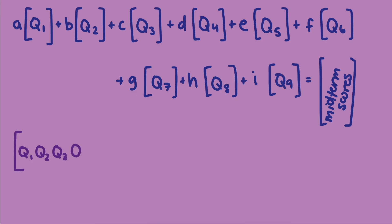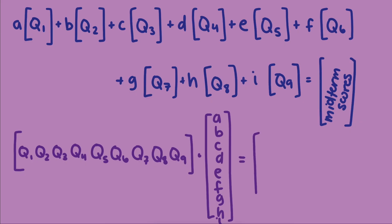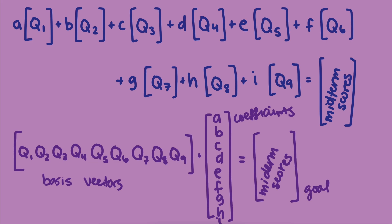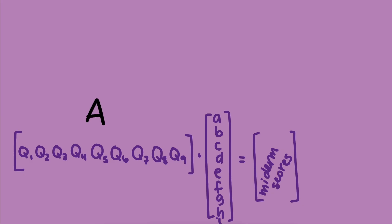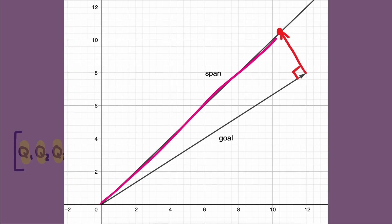We can use what we know about dot products and orthogonal vectors to set up an equation and solve for the coefficients. The projected vector is a linear combination of basis vectors, and linear combinations can be represented as matrix multiplication, with the columns of the matrix being our basis vectors and the vector being the corresponding coefficients. We will call the matrix with our preference survey answers A — it has nine columns, one for each survey question. Since we don't know the coefficients, we will call the vector of coefficients X bar. Finding the entries of X bar will solve our problem. The projected vector, which we'll call P, can be written as AX. The vector from the head of P to the head of the goal vector we'll call D — for difference — because we can calculate it as the difference between P and the goal vector.